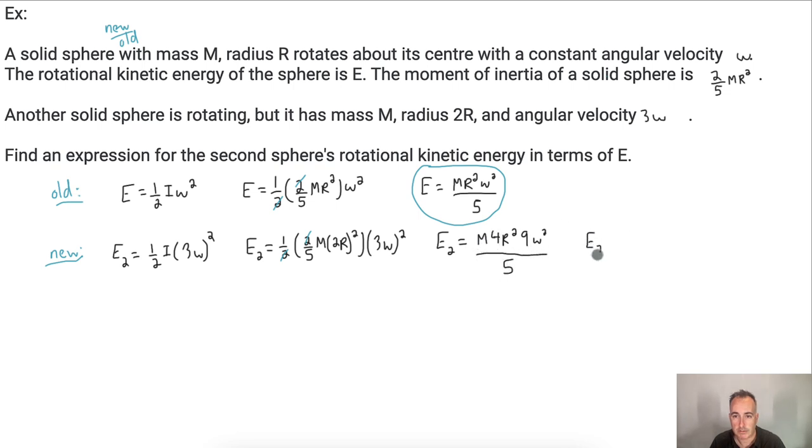All that over 5. So that means E_2, let's just do it all over here. What's 4 times 9? That's 36. So I have 36 times MR squared omega squared, all that over 5. That's my second equation, or new.